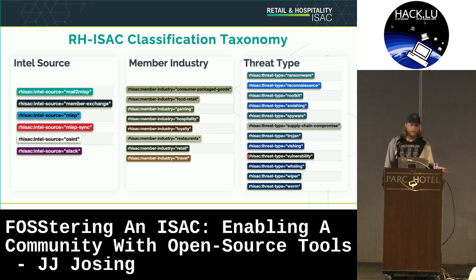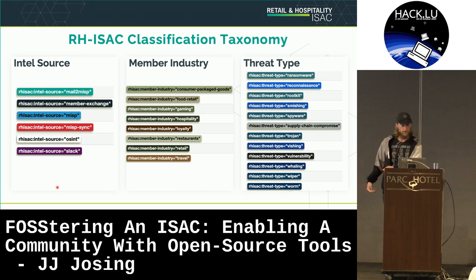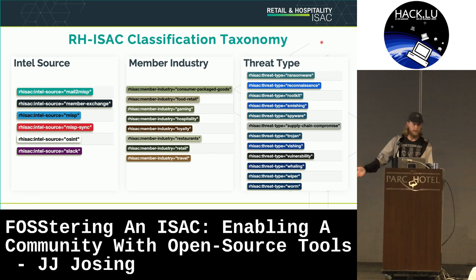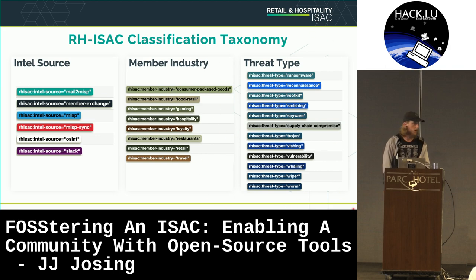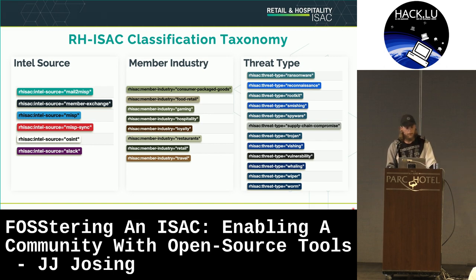Over the last year, our intel team developed our own classification taxonomy. It breaks down three things: the intel source — which platform the intel was shared on; the member industry — what industry the sharing member was in; and the threat type — a generic threat type classification. By having these three predicates in the taxonomy, we're able to do more granular breakdowns and reporting around the intel being shared.